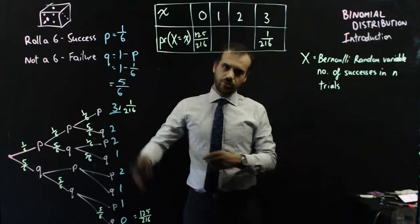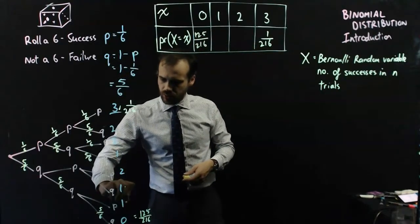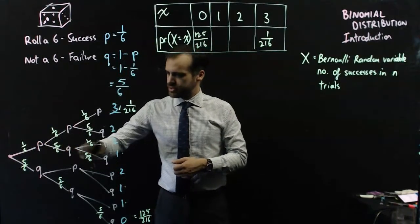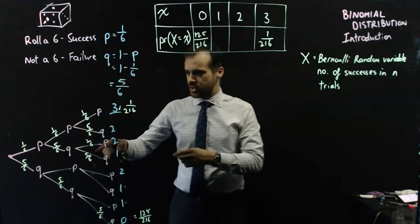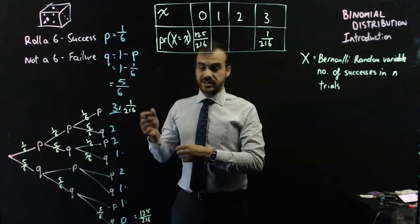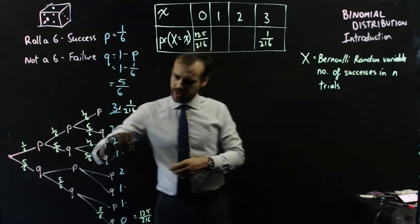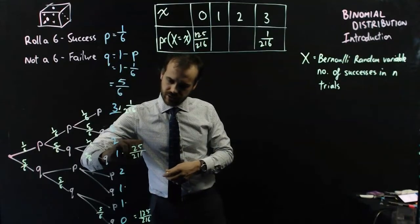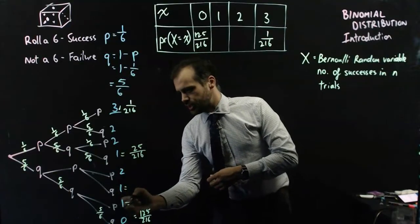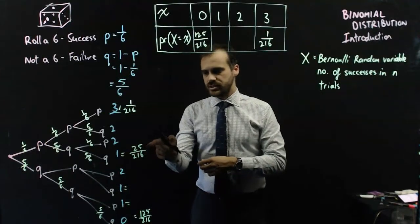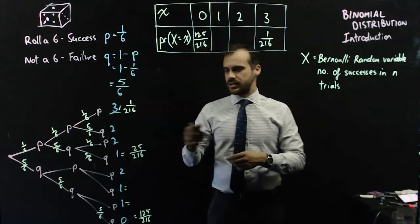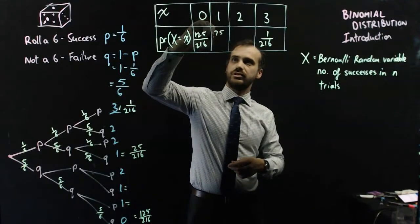The 1's are a little more complicated. Let's do the 1's. 1 in 6 times 5 in 6 times 5 in 6. That's 1 success, so that's 25 out of 216. But the same number we'll get here, we'll get here, and we'll get here. So 25 out of 216 plus 25 out of 216 plus 25 out of 216. That's 75 out of 216.